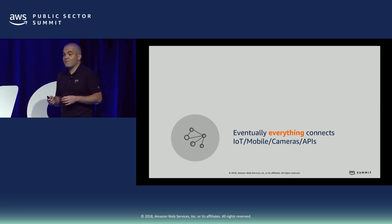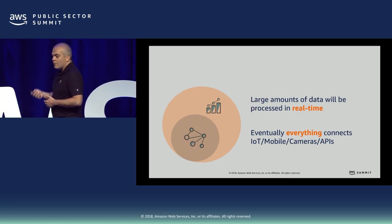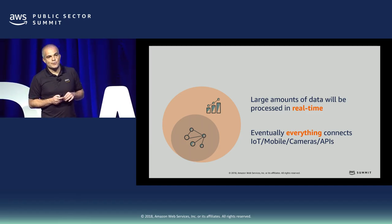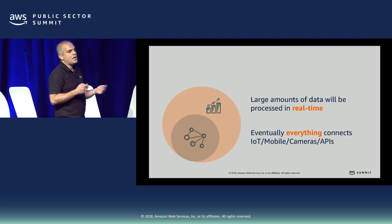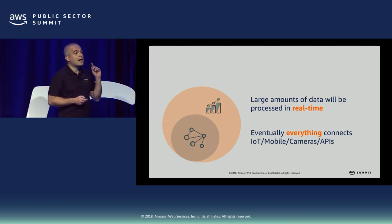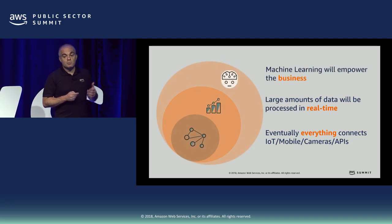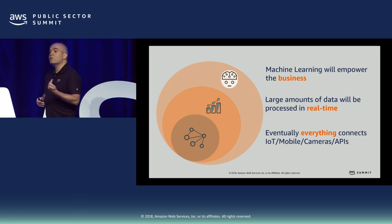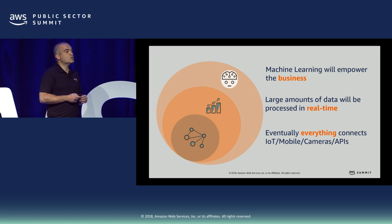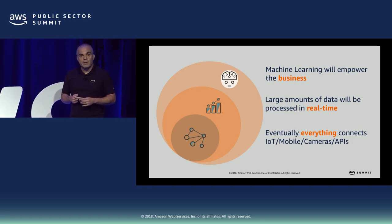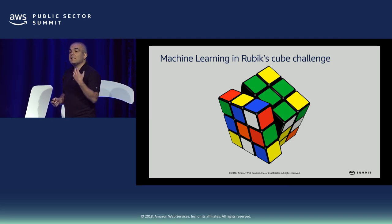When you have all this data, you face a new challenge in how to manipulate it. What customers have told us is that many times it's not about the technical part — it's about how to break the silos. Exchanging information is very important because it lets you find good insights, and those insights are key for machine learning. Machine learning will help empower your business — either doing things you've done before but better and faster, or doing things you've never done before.